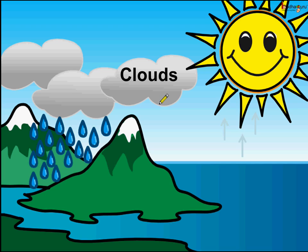Finally, these big drops become so heavy that the clouds cannot hold them. And what happens next? These water drops fall as rain, and we get rainfall. And this is the rain which fills in all the lakes, rivers, and ponds again.